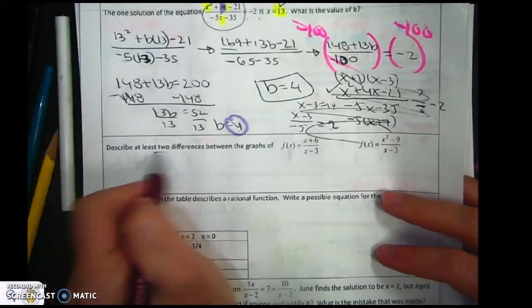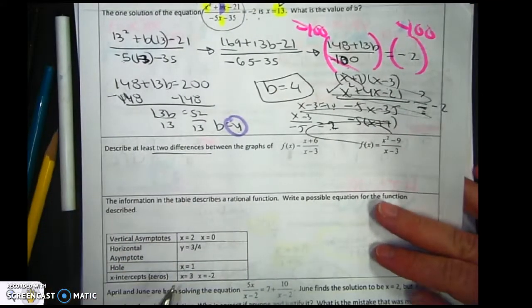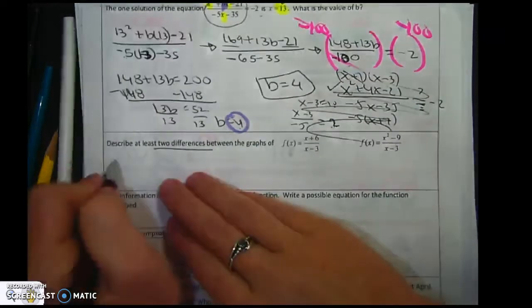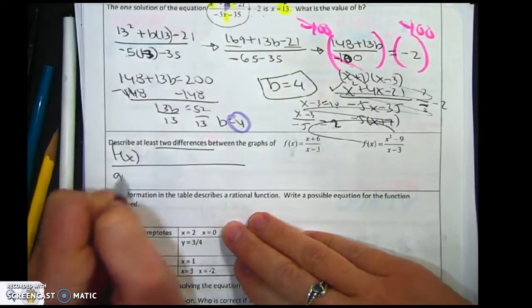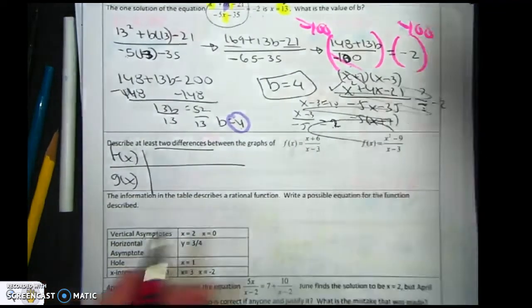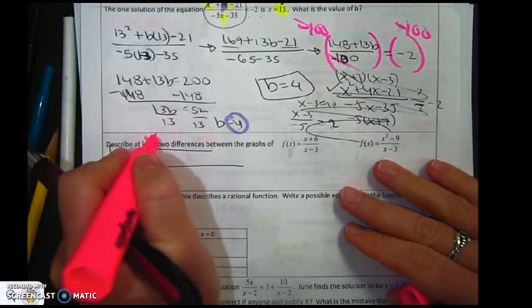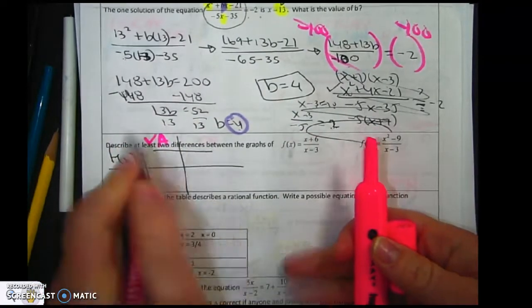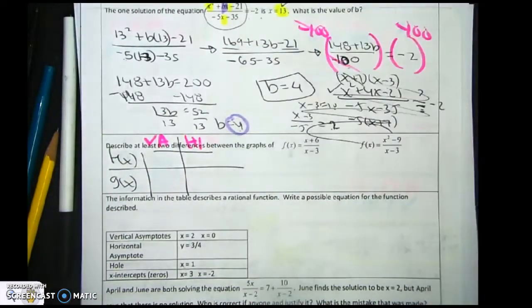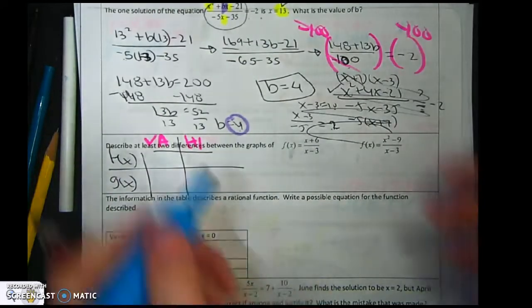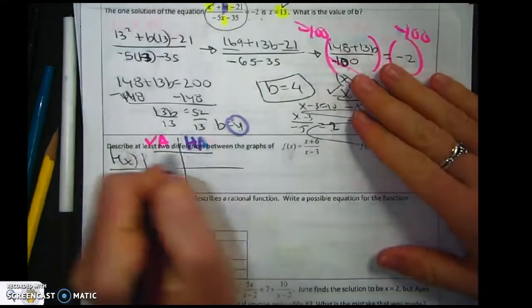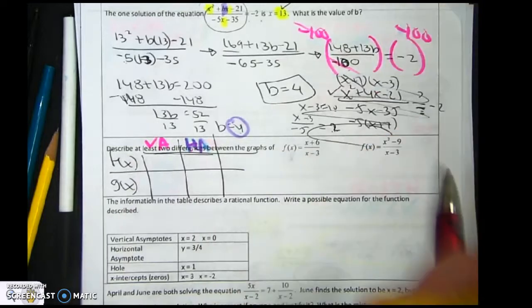So describe at least two differences between the graphs. So here's what I'm going to do. You give me 2, I'm a happy girl. You give me more, you're going to get bonus. If there happens to be more, however many differences there happen to be, that's how many points of bonus you're going to get. So I'm going to write V-A, H-A. Find my blue. My zeros.